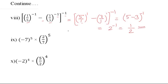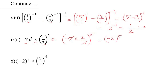Ninth: negative 7 whole raise to the power 5 multiplied by 2 upon 7 whole raise to the power 5. Since the powers are the same we can combine: negative 7 multiplied by 2 upon 7, whole raise to the power 5. The 7s cancel, giving negative 2 whole raise to the power 5. We can write this as negative 2 raise to the power 5, because the power is odd, so the result is negative. If the power were even, we could write simply 2 raise to the power 5.